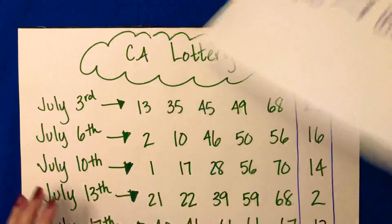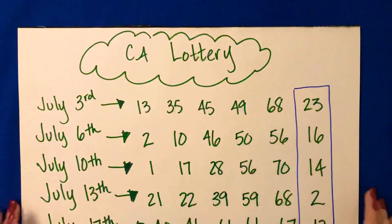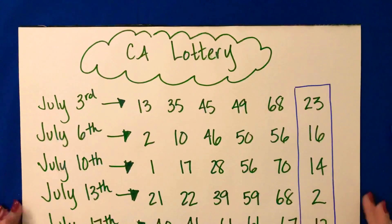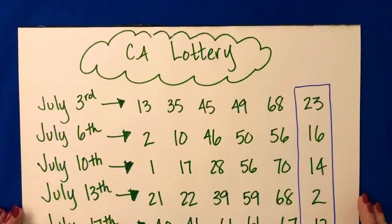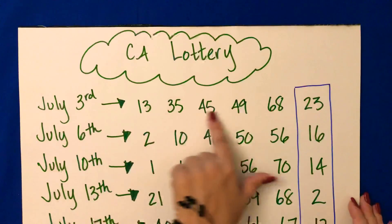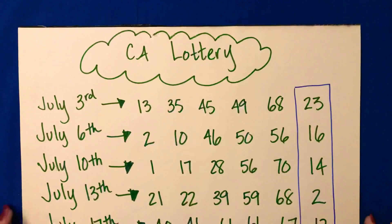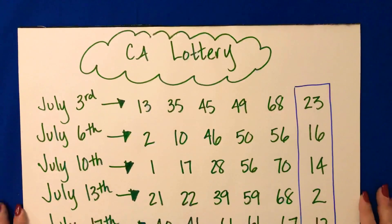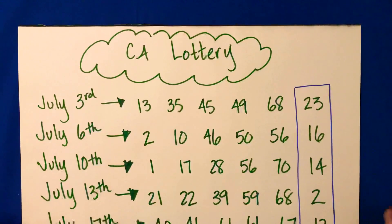So let's take a look at this set of data. This is a set of numbers that came from the California Lottery website showing all of the winning numbers for the Mega Millions game during the month of July. So if I were going to play the lottery, I would want to choose numbers that show up in the winning set of numbers as often as possible so that I can try to win.